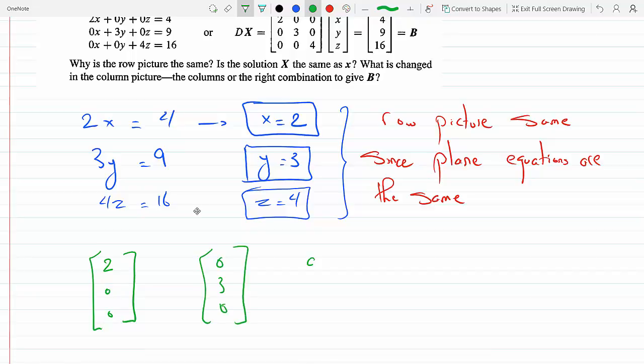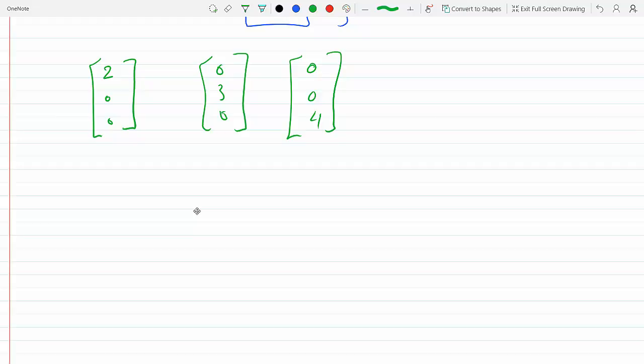So the first vector now will go to 2, so this is 0, 2, 0, 0. The y, the j vector, is 0, 3, 0, slightly longer.